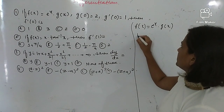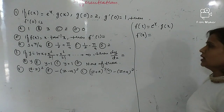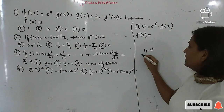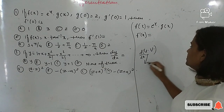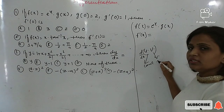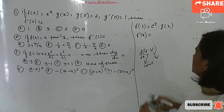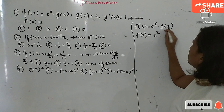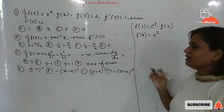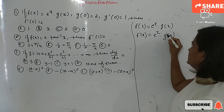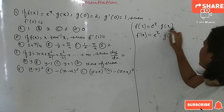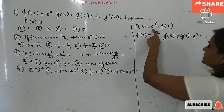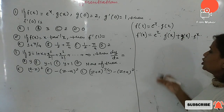The derivative f'(x): on the RHS there are two functions multiplied, so we apply the u·v rule. The derivative of u·v is: first function constant times derivative of the second function, plus second function constant times derivative of the first function. So e^x is treated as constant and derivative of g(x) is g'(x), plus g(x) constant times derivative of e^x.